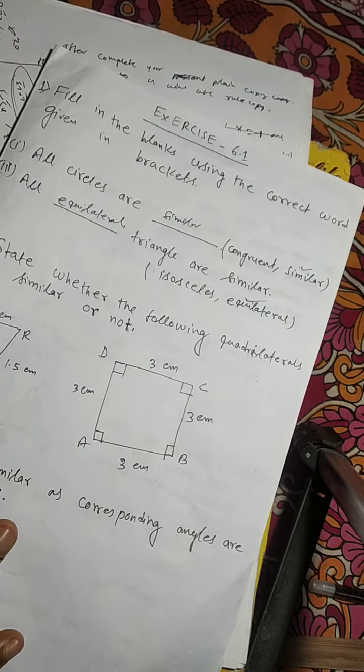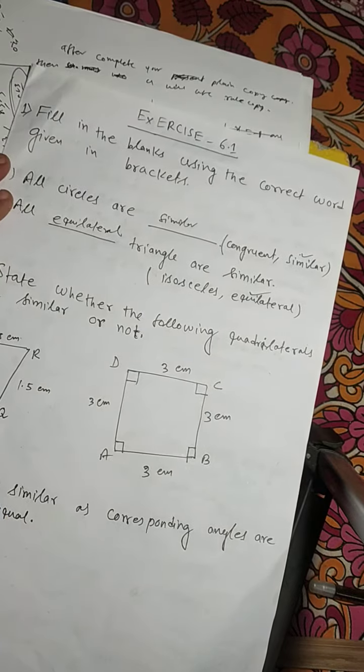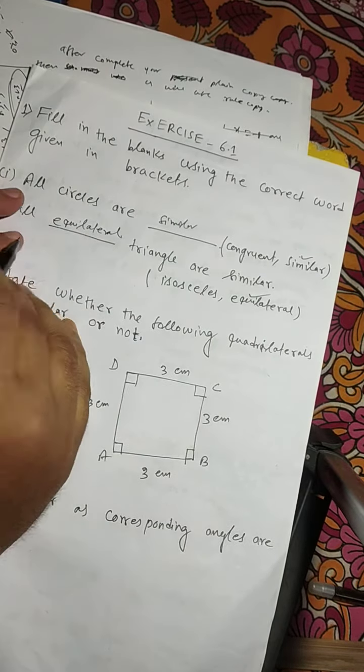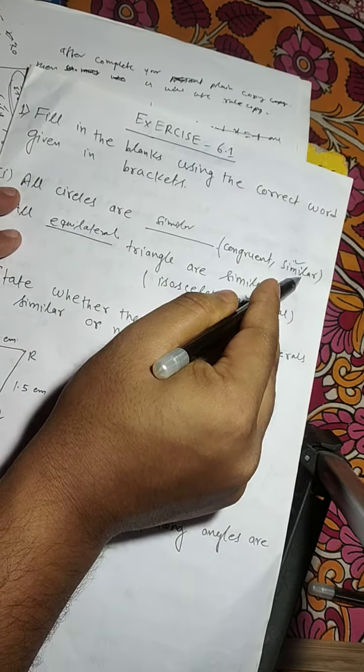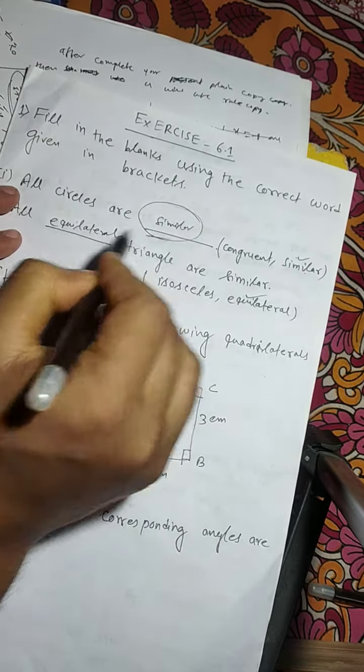Now I am discussing exercise 6.1. Fill in the blanks using the correct word given in the bracket. All circles are... congruent or similar? The answer is similar.